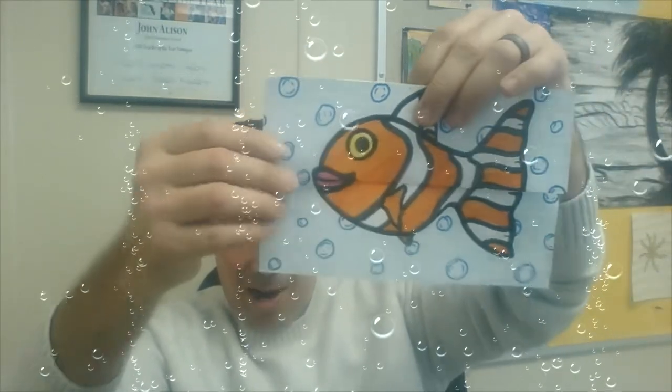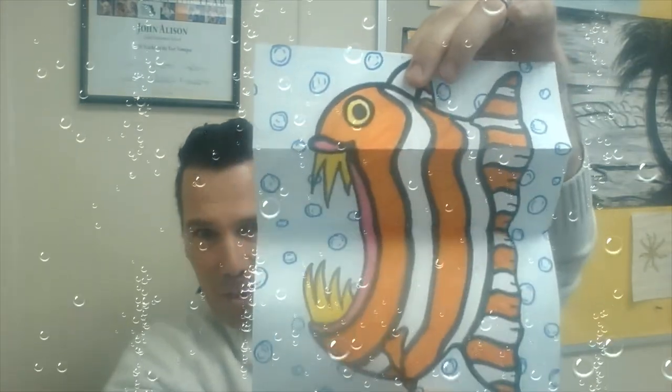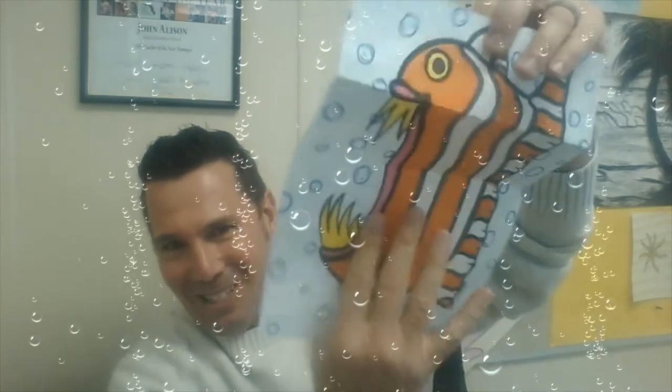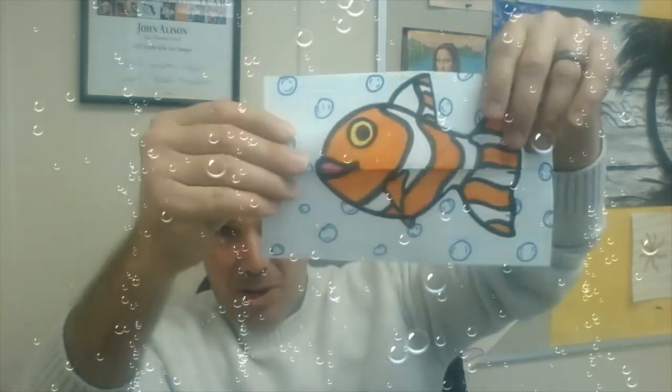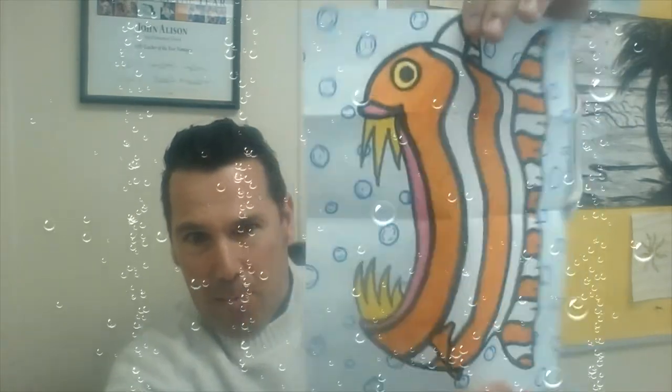But he has a surprise! He can open his mouth wide! Look at that! Isn't that awesome? Our little friendly Nemo-looking fish has a very big mouth and teeth. I'm going to show you how to do that today. Now, if you feel inspired to draw a different type of fish or animal, you go ahead and do that. I'm going to show you how to draw the little Nemo-looking guy.